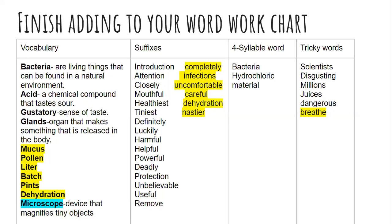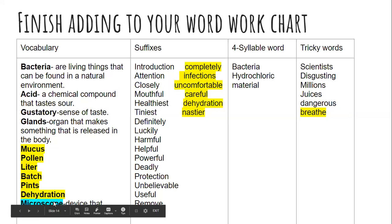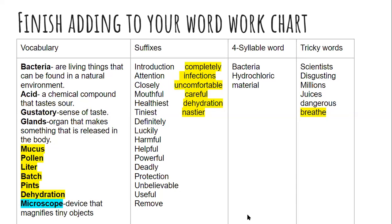One word you're going to need to know today — look at the bottom under vocabulary — is microscope. A microscope is a device that magnifies tiny objects. When you need to see something up close you put it under a microscope. Some things are super tiny that you can't see with your own eye, so you need a microscope. We're going to finish adding to your word work chart as you read the last few pages of our text.